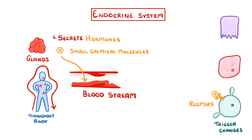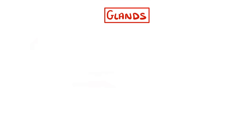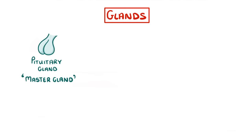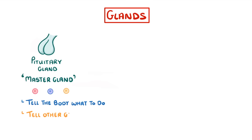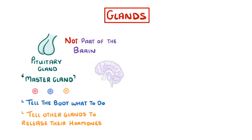We'll see some of these glands in more detail in other videos, but for now let's look at the main glands in the system and see briefly what they do. First, we have the pituitary gland, which is sometimes called the master gland. It produces multiple different hormones, some of which directly tell the body what to do, and some which tell other glands to release their own hormones. It's not actually part of the brain, but it's pretty close, and it is attached to the brain.